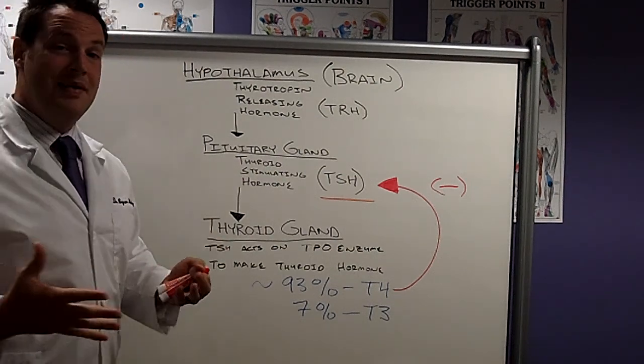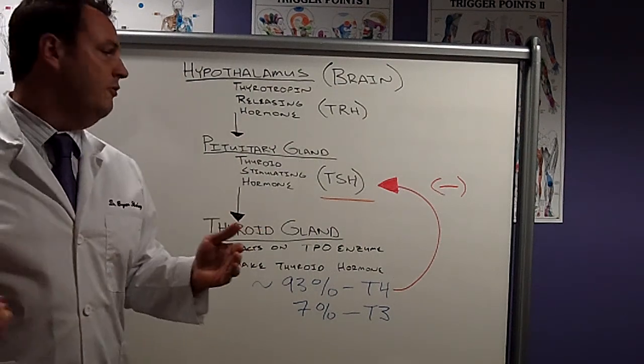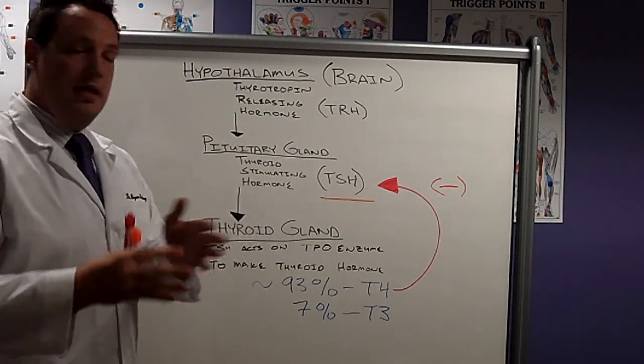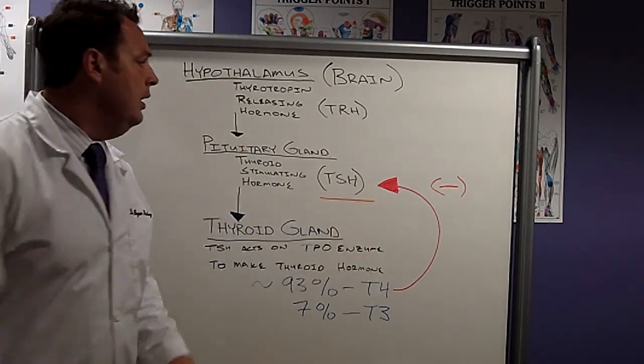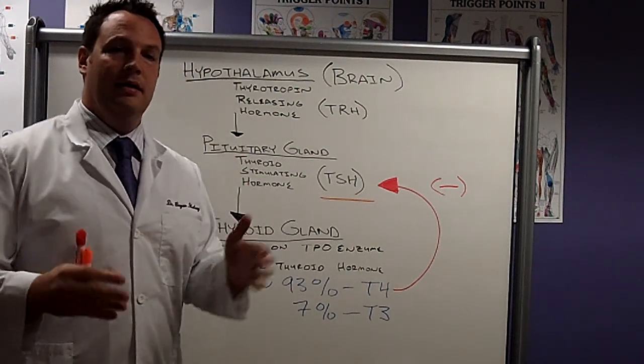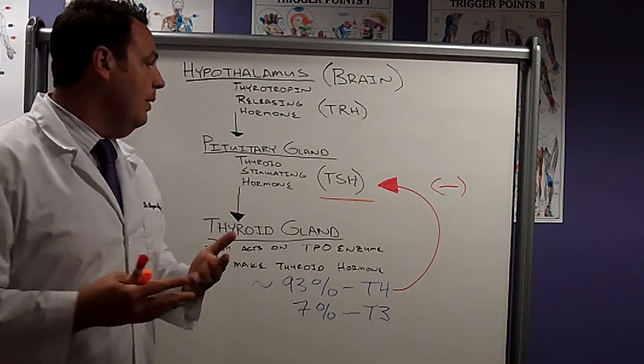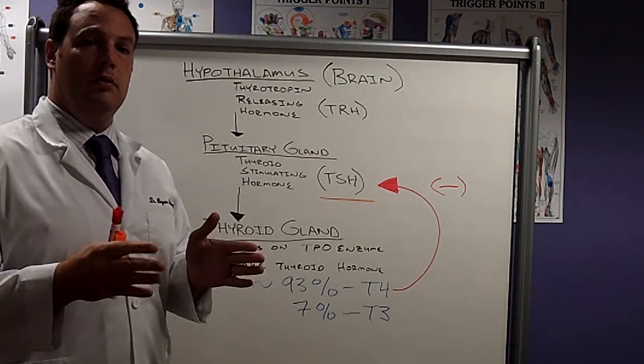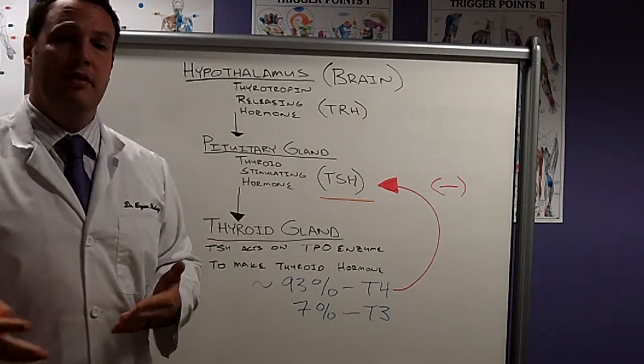However, sometimes this is the only test that is checked. Unfortunately, a lot of people are missed with thyroid symptoms because this lab range is very broad. If we were to look at a smaller functional range, which should be 1.8 to 3 for TSH, I think a lot more people would be picked up as having hypothyroid symptoms or low-functioning thyroid.